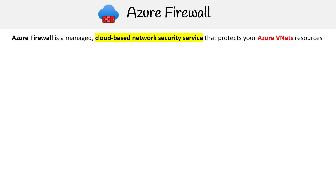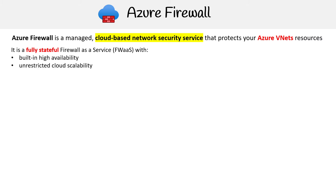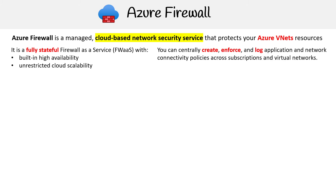Azure Firewall is a managed cloud-based network security service that protects Azure VNet resources. It's a fully stateful firewall as a service, so you're going to get built-in high availability and unrestricted cloud scalability. You can essentially create, enforce, and log application and network connectivity policies across subscriptions and virtual networks.